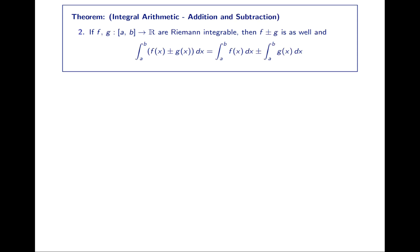Now addition and subtraction. If f and g are Riemann integrable, then so is f+g and f−g. Furthermore, we can distribute the integral. Results 1 and 2 of our integral arithmetic mean that the integral operation is a linear operation — if you remember that definition from your linear algebra course. We'll talk more about linear operators later in the semester. In the proof we'll just look at addition, but subtraction follows in the same way.